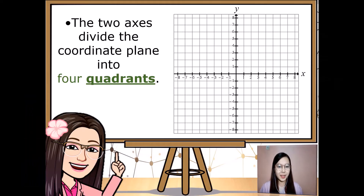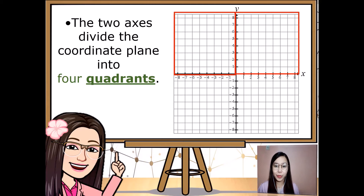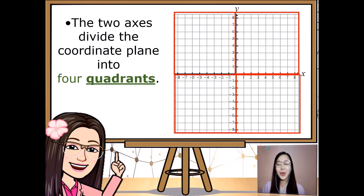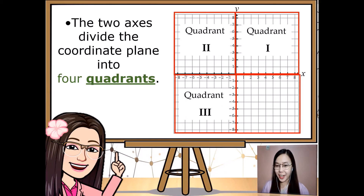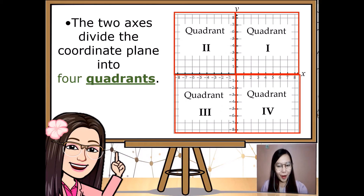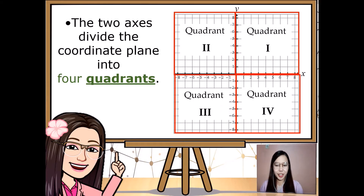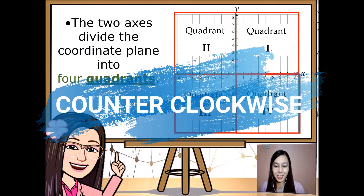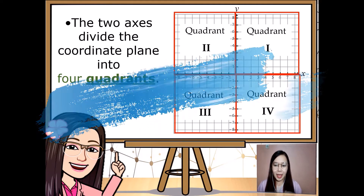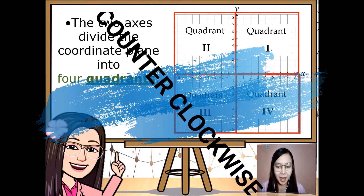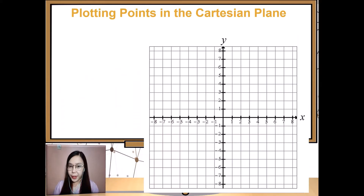The two axes divide the coordinate plane into four quadrants. Let's count: one, two, three, four — Quadrant 1, Quadrant 2, Quadrant 3, and Quadrant 4. The movement around the Cartesian plane into four quadrants goes counterclockwise.